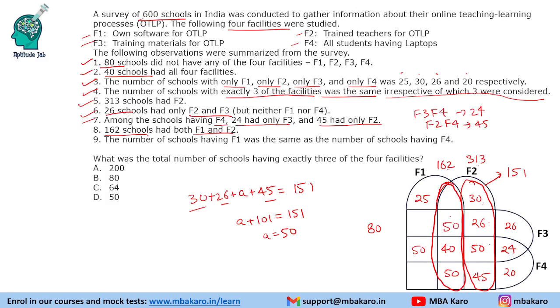Now we can also get the remaining intersection value inside the F1∩F2 region. That total is 162, and with 100 and 40 already accounted for, the remaining value comes out to 22. So that intersection slot is now filled as 22.